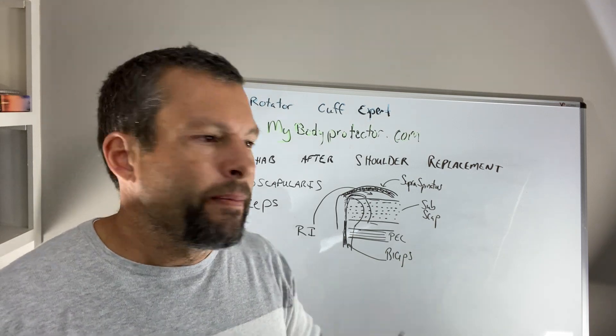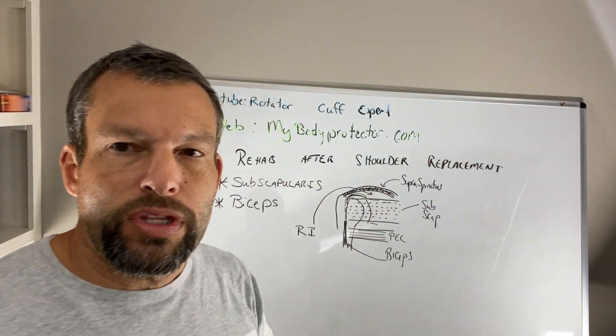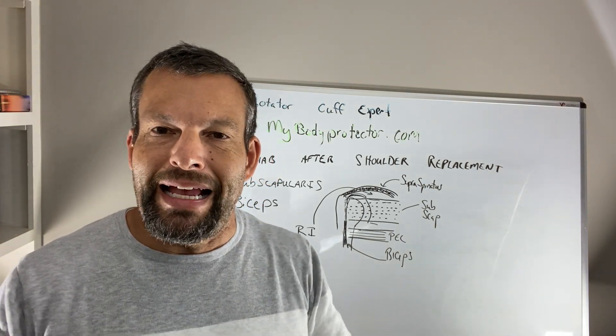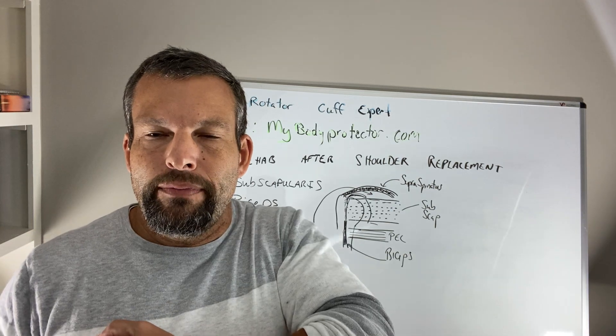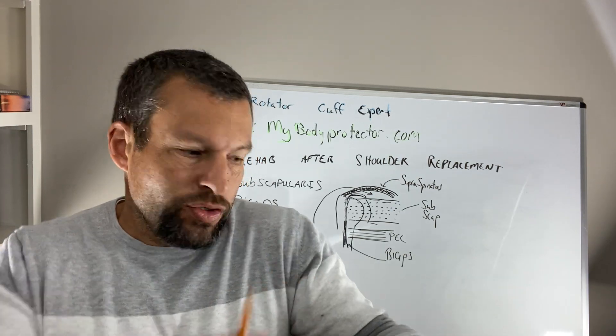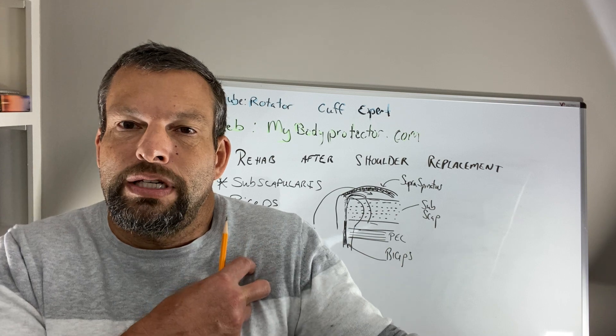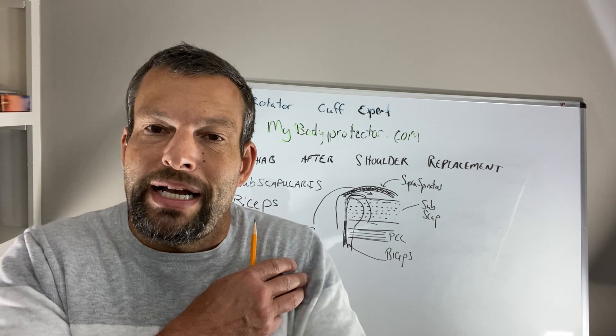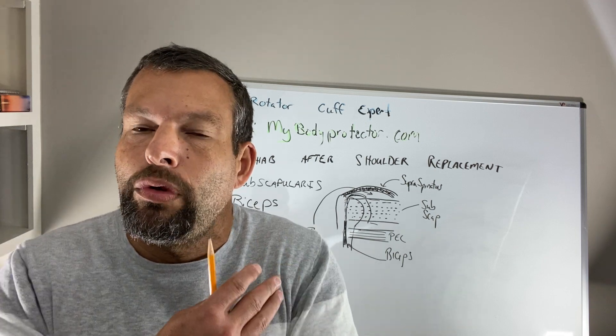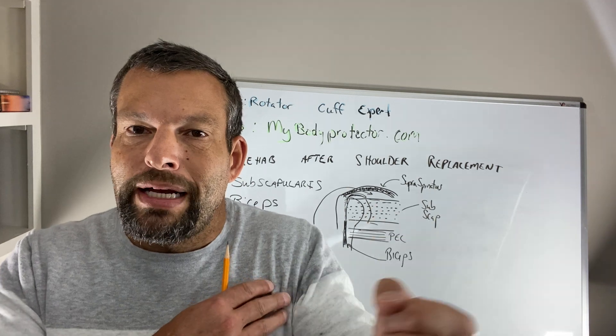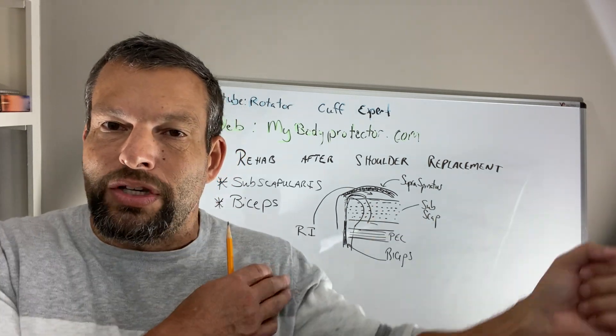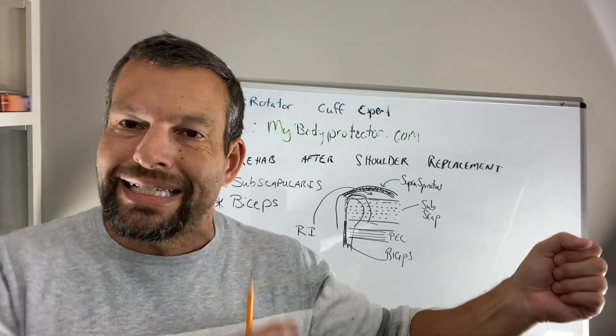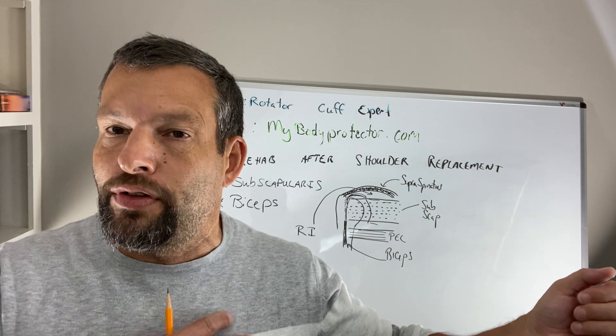So the subscapularis does two things. The subscapularis is an active internal rotator of the shoulder or of the arm. So it's attached here. If you can imagine, if the muscle is here and the tendon is here, when the muscle contracts, you bring your arm in. And so we want to minimize contraction of that muscle after surgery because we don't want to pull the repair off, right? And then we want to minimize external rotation because if you externally rotate too far, you actually can pull it off as well.